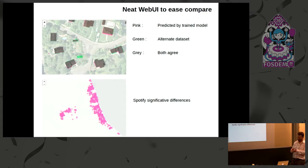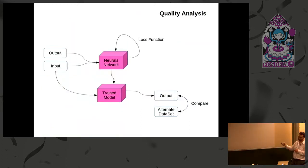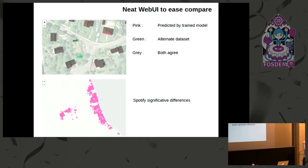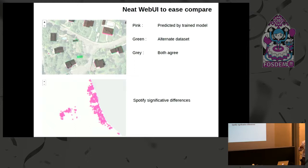In the visualization, pink is what is predicted by the model, green is the labels, and gray is where both agree. It's a quick way to check if the model and the labels are matching. For instance, one discrepancy is because a building is hidden beyond trees, making it harder for the model to find it. Zooming out, you can see spotty differences that help you save time by focusing only on areas where there are enough differences between your two datasets.